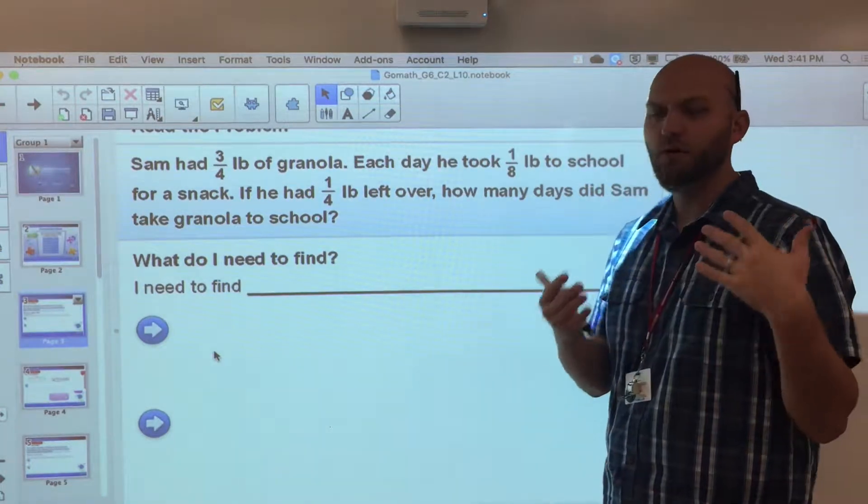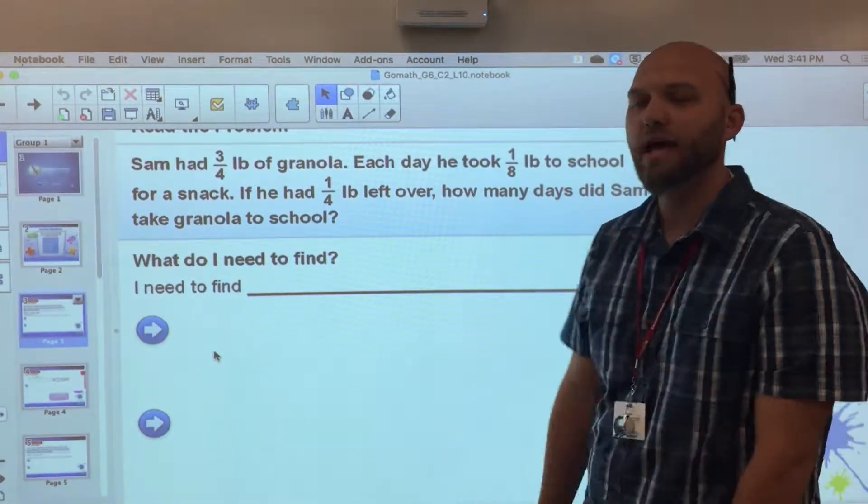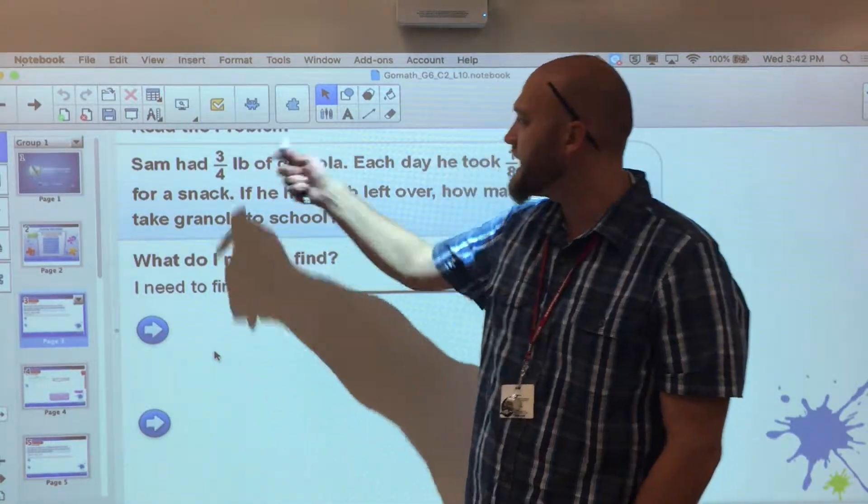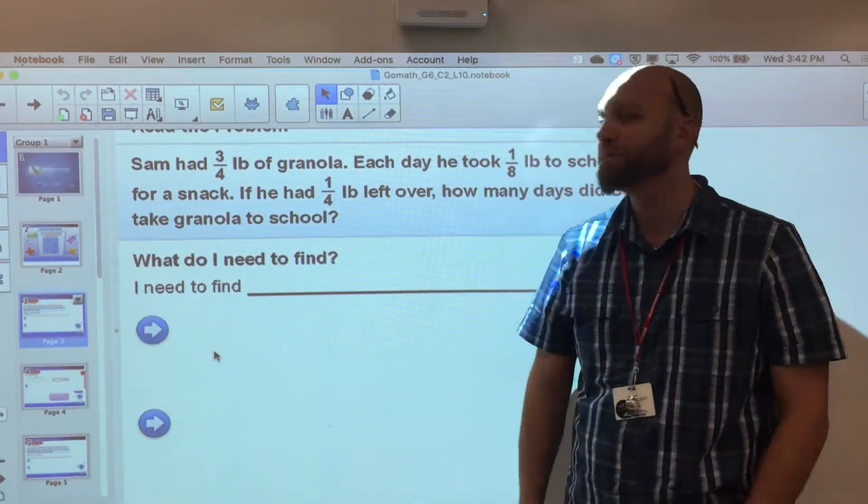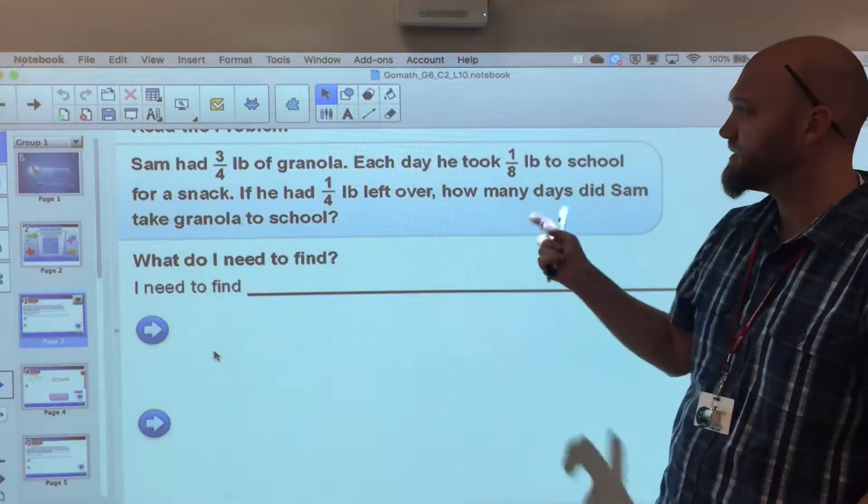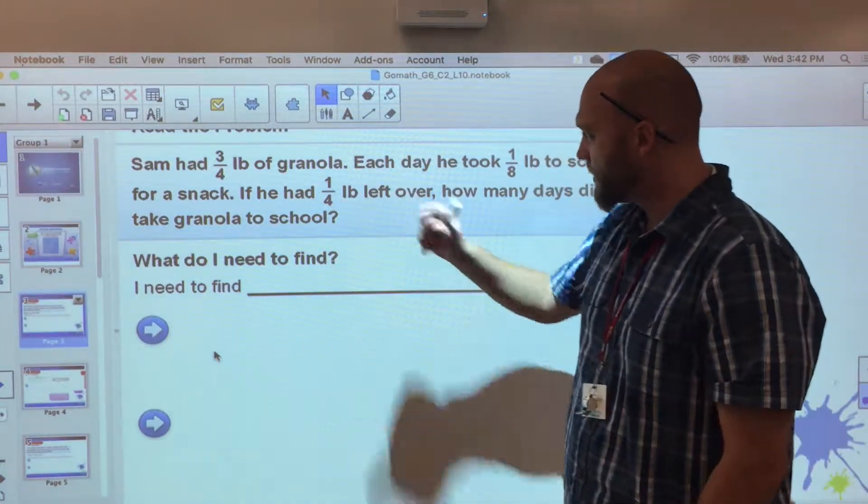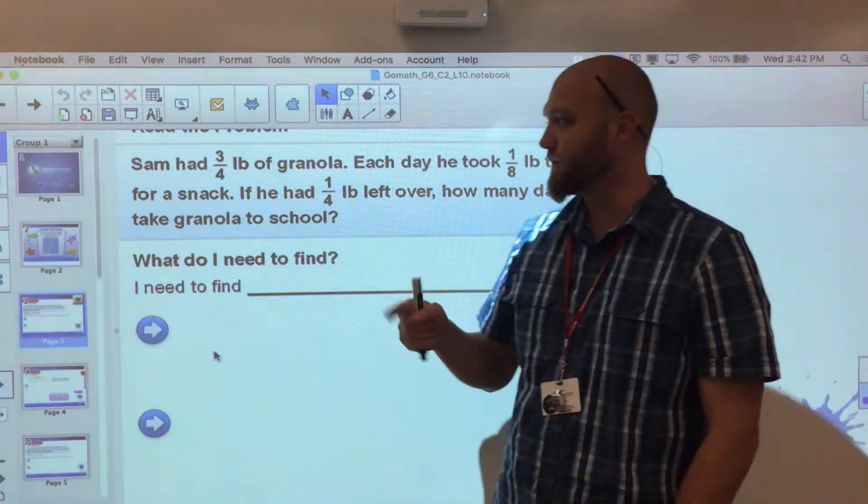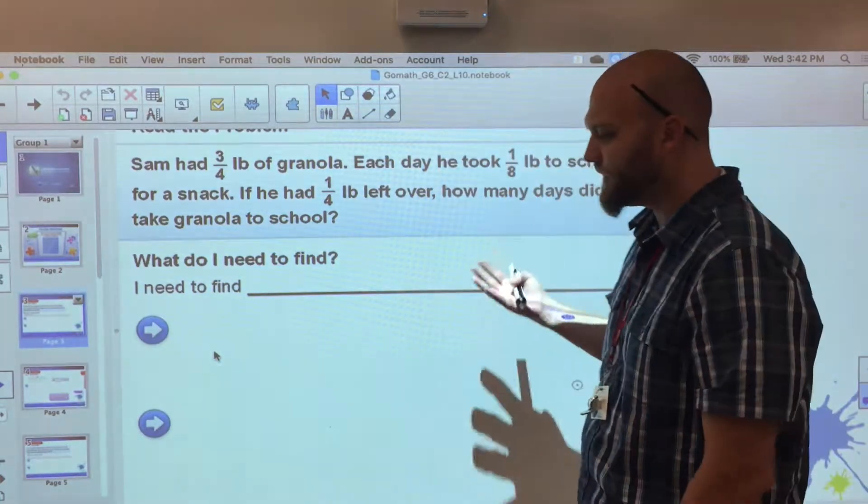The first problem is: Sam had three-quarters of a pound of granola. Each day he took one-eighth pound to school for a snack. If he had a quarter pound left over, how many days did Sam take granola to school?